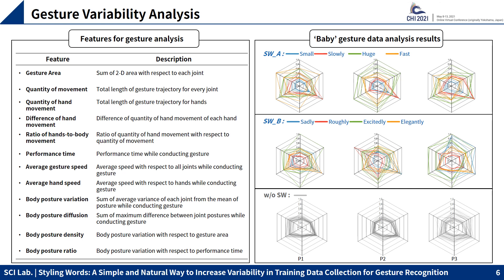For participants, features of gestures with styling words have much bigger variability compared to without styling words. Unlike what we expected, type A showed more noticeable variability than type B. The degree of difference depends on the participant and gesture; however, they show a clear difference on average.